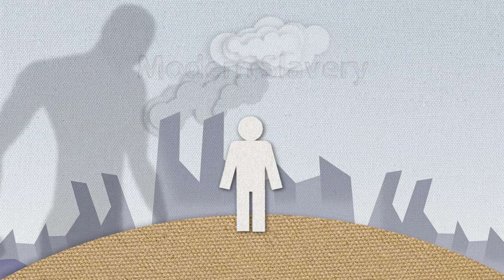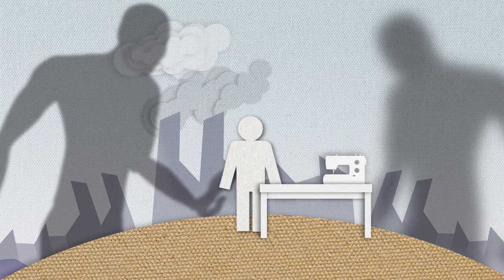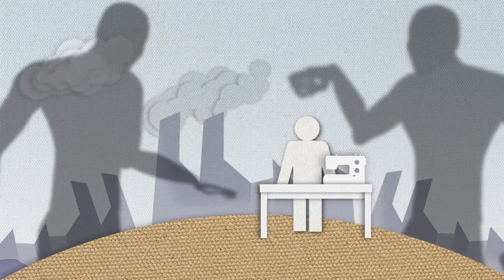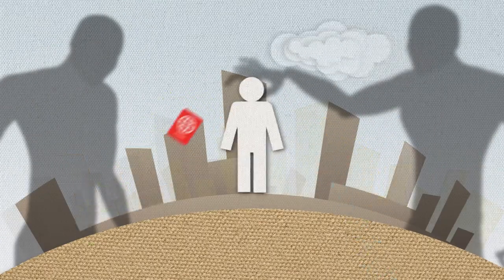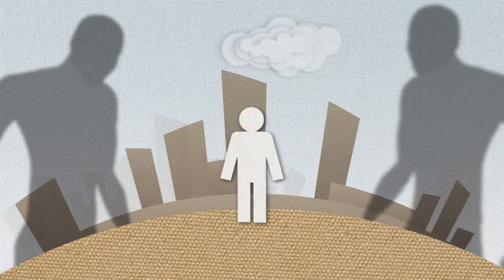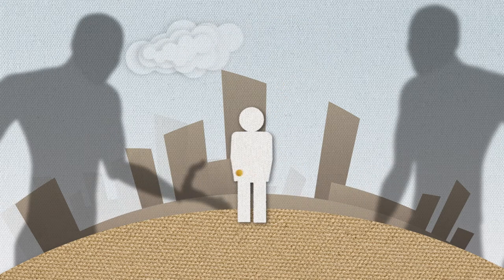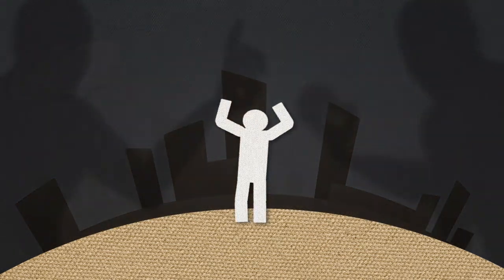Modern slavery. At the extreme end of unlawful practice, workers can be forced to work against their will or be bought and sold. They can have documents confiscated so they cannot escape. They can be forced to work for very low wages, often to pay off debts, or they can be threatened and ill-treated.